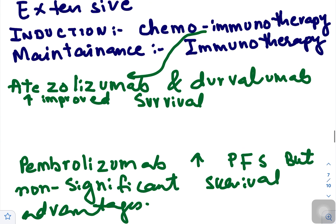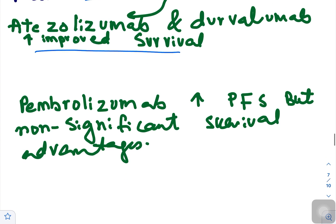Now coming towards extensive disease. Induction therapy is followed by maintenance therapy. In induction therapy we give patient chemo-immunotherapy, then on maintenance keep the patient on immunotherapy. For immunotherapy you can select PD-1s or PD-L1 ligands - atezolizumab or durvalumab. These both improve survival; you can choose either of them.